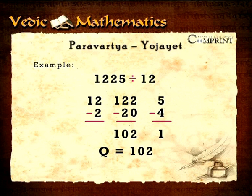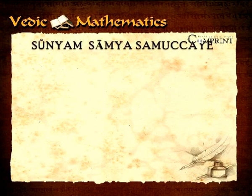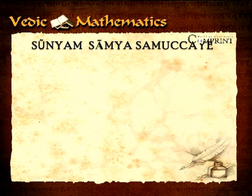Ekadhikena Purvena means by one more than the previous one, a quick way to square numbers that end in 5. For instance, the quotient equals 102 and the remainder being 1. Shunyam Samya Samuchchaye.